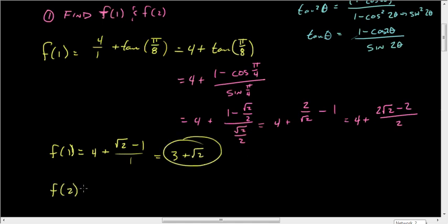f(2) is quite a bit easier. It's 4 over 2 plus the tangent of pi over 4. Tangent of pi over 4 is 1, and so you get 2 plus 1, which is 3. So those are the two endpoints.